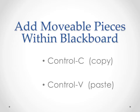Then we will add movable pieces within Blackboard. The two main keystrokes to write down and remember: Control-C copies an object from wherever you have it, and Control-V pastes it into Blackboard. You can even copy and paste within Blackboard from page to page, or make multiple copies of something. Those are two keystrokes you want to remember.